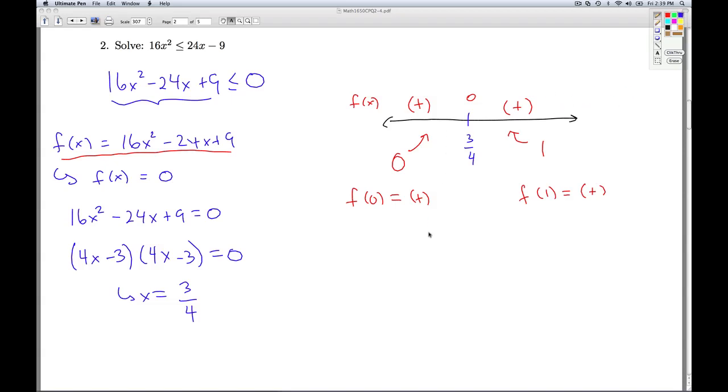Now I'll go back to my original problem. My original problem was I wanted f of x to be what? Less than or equal to zero. So I'm looking for where f is either zero or negative. Well, I don't see any negatives at all. I only see a point where it's zero. That means my final answer is only one point, and that's the point three-fourths. That'll do it for number two.